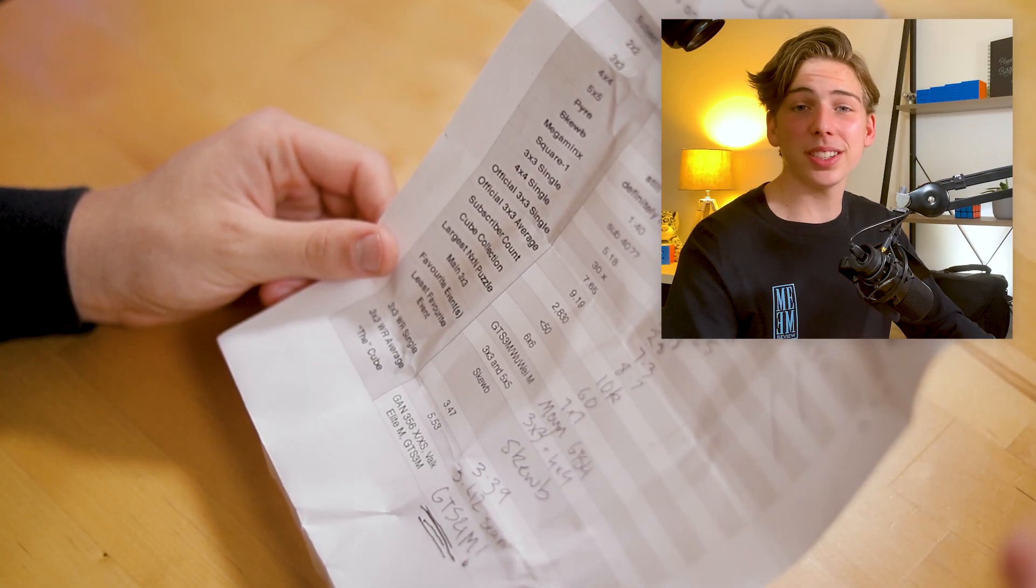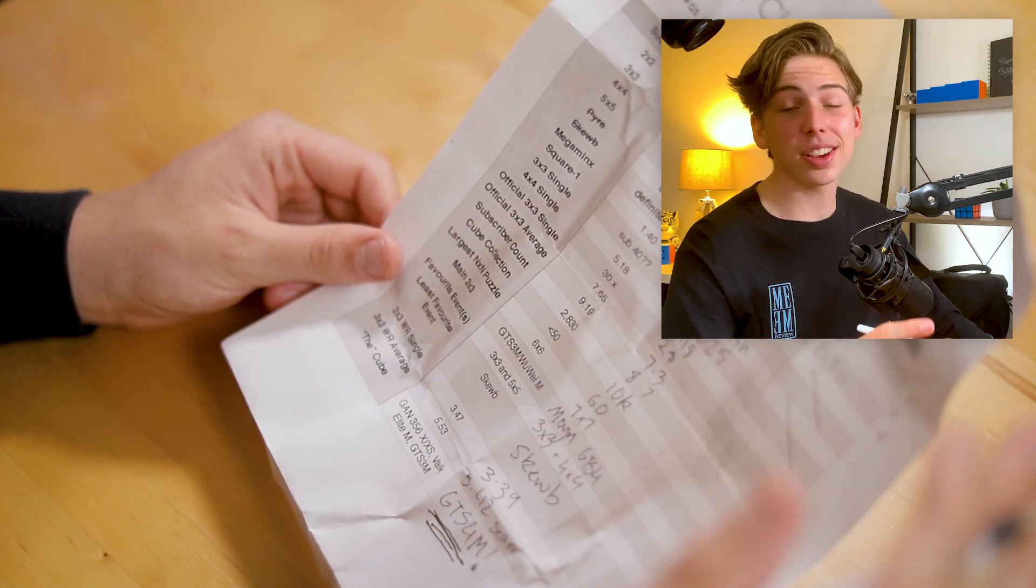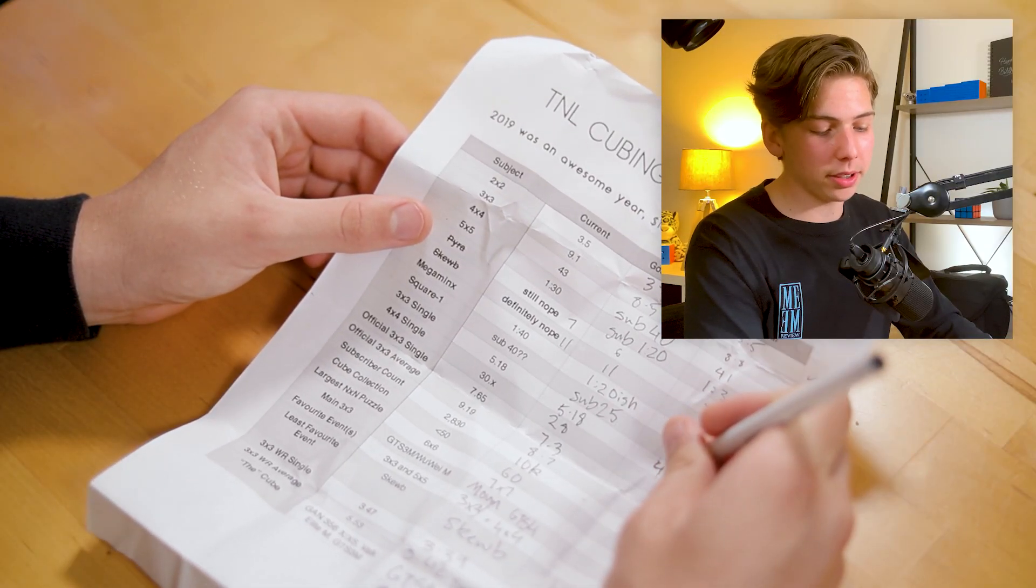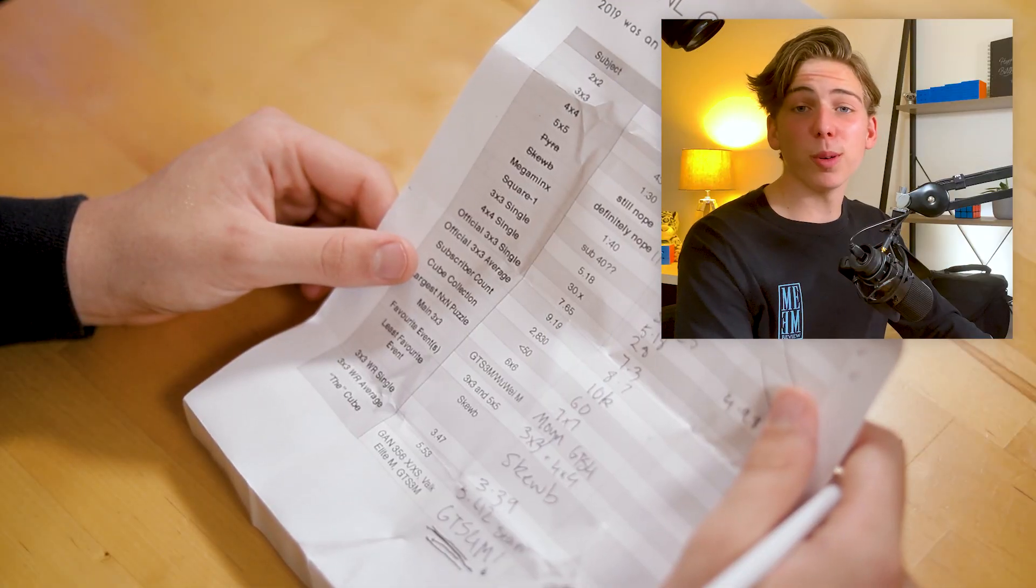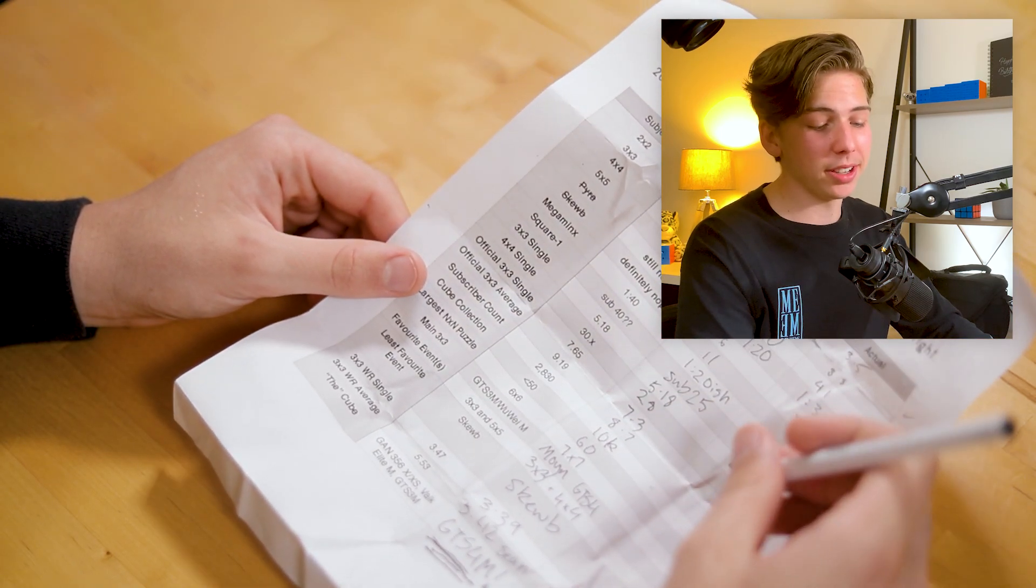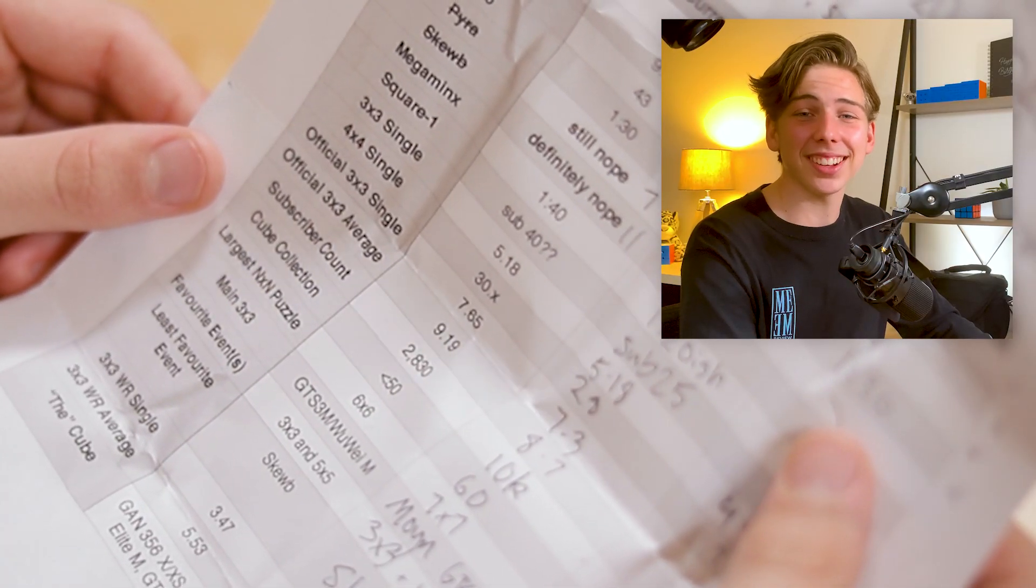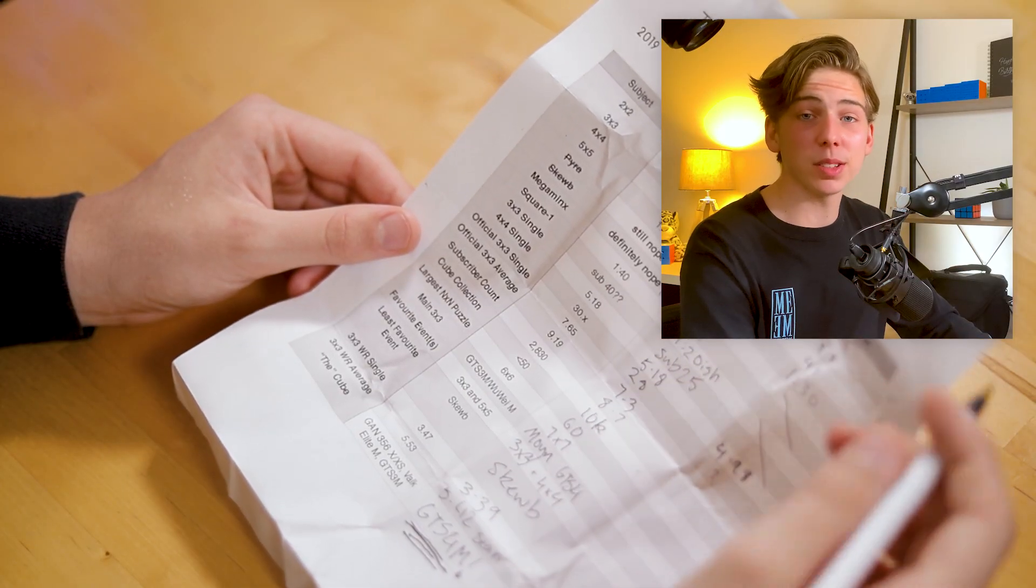Something interesting: my 3x3 single of 5.18, I did not think I would break it. I actually got a 4.98 earlier on in the year, so I still got it wrong though. My 4x4 single, I'm yet to get a sub 30, so we got that wrong too. I'm gonna try not to cry here, but my official 3x3 single and average, they did not change at all. I guess that's what happens when you go to one comp in the year.